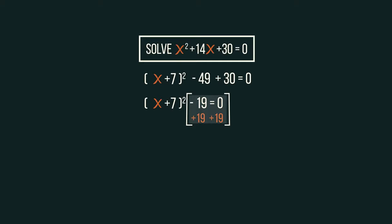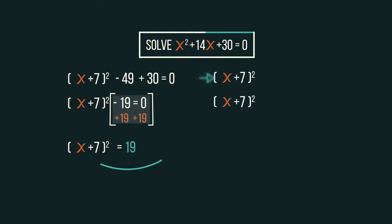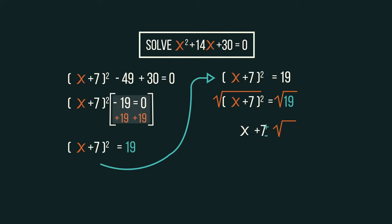Rearrange by adding 19 to both sides and we get x plus 7 squared equals 19. Square root both sides, and because square rooting a square cancels out, we're left with x plus 7 equals plus or minus the square root of 19.